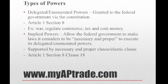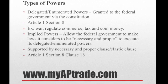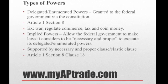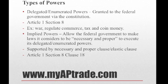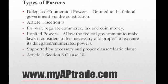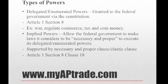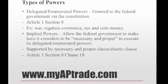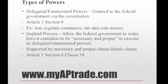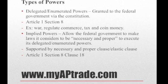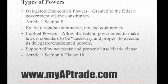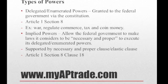Implied powers allow the federal government to make all laws which it considers necessary and proper for carrying into execution the enumerated powers. Since it was impossible for the framers to predict all the powers Congress would need, they created the necessary and proper clause — also known as the elastic clause — found in Article 1, Section 8, Clause 18 of the Constitution.